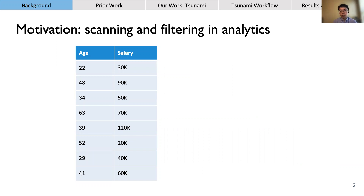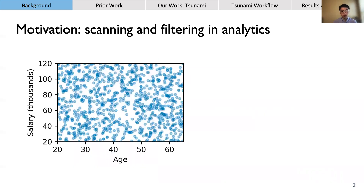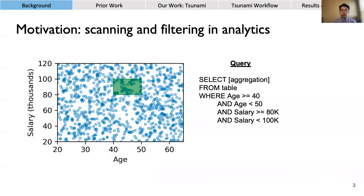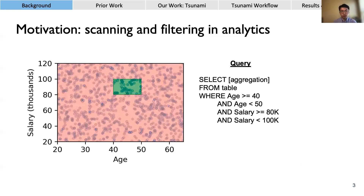To explain what I mean by scanning and filtering, let's imagine that in your data warehouse you have a simplified table with two columns, age and salary. We're going to visualize the rows of this table as points in multi-dimensional space, where the x-axis represents age, the y-axis represents salary, and every point represents a record. A user wants to run a query computing some aggregation over all points where age is between 40 and 50 and salary is between 80 and 100k. Visually, the query filter is a green rectangle, and the most straightforward way to find those points is a full table scan, resulting in a lot of extra scanning over irrelevant points shaded in red, which increases query time and hurts performance.